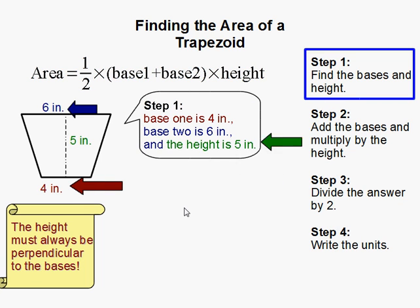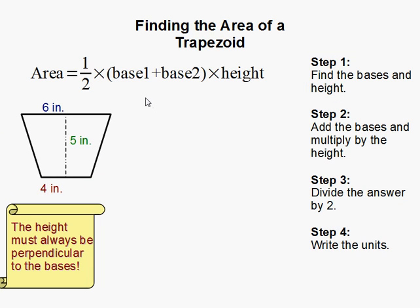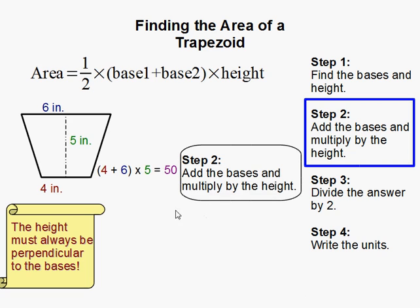So we have 6, 4, and 5. Then, following our equation, we add the bases: 4 plus 6, and then we multiply by the height.